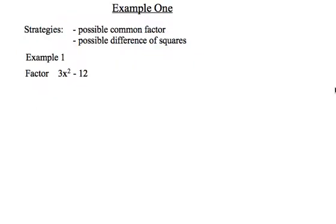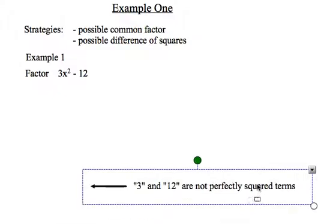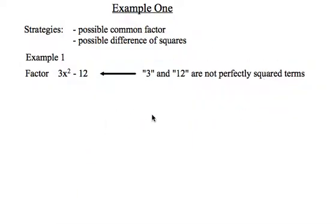Example one. So my strategies here I want to consider the possibility there's a common factor and because there are two terms I want to have the possibility of a difference of squares in my mind as well.